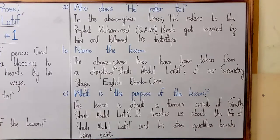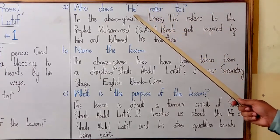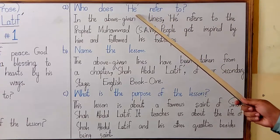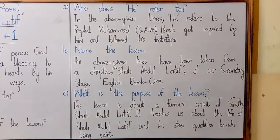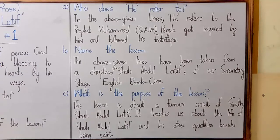So you see on the board every single answer justifies two marks at least. Otherwise you can also shortly answer these questions, like 'he refers to Prophet Muhammad,' but this one-line answer does not justify two marks, so we have to write something in detail. As I told you the technique: whatever the answer is, you will keep it in the middle and add one piece of information before it and one after it — this is how you can justify two marks for that particular question.